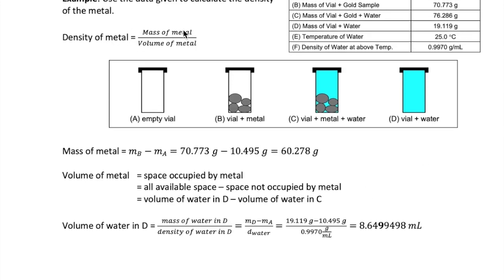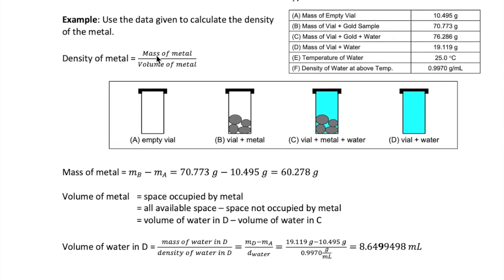Now, to get the density of the metal, you're going to need to divide the mass of the metal by its volume. The mass of the metal is easily calculated by subtracting MB from MA, which gives us 60.278 grams using these two numbers right here. The more difficult calculation is the volume of the metal.